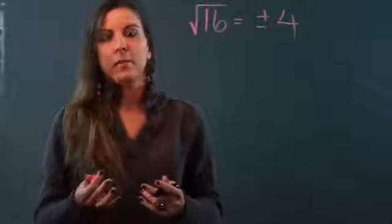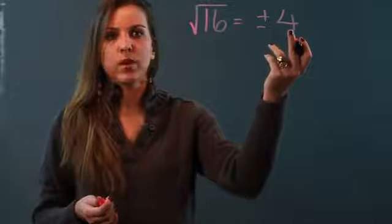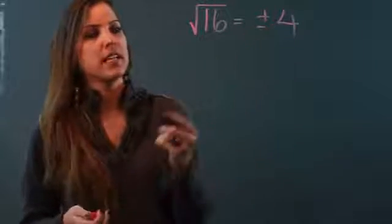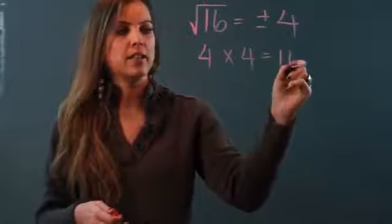A square is a number that I get by multiplying the square root by itself. So if I take the positive 4 and I multiply by itself, I do indeed get 16.